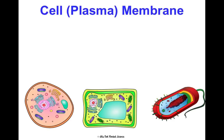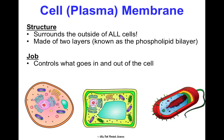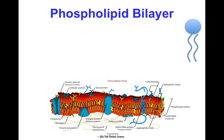The first organelle is the cell membrane, or plasma membrane. At the bottom of each organelle slide, there's a picture of an animal cell, a plant cell, and a prokaryotic bacteria cell, so you can see where each organelle exists. The cell membrane surrounds the outside of all cells. It's made of two layers — a phospholipid bilayer. Its job is to control what goes in and out of the cell, which is really important for maintaining homeostasis, a stable internal environment we'll learn about in concept two.